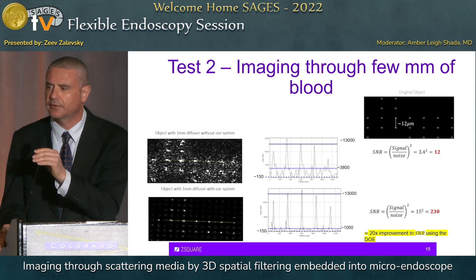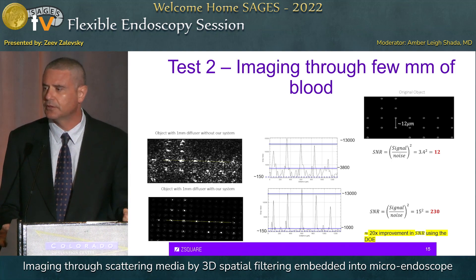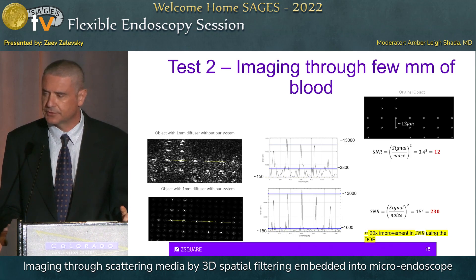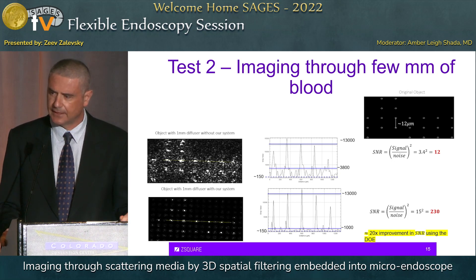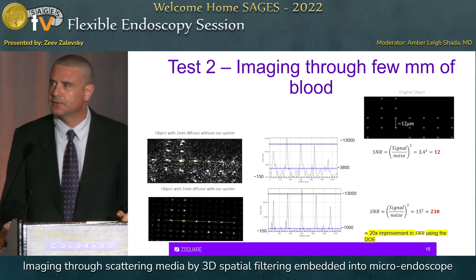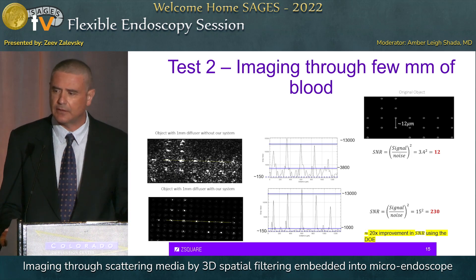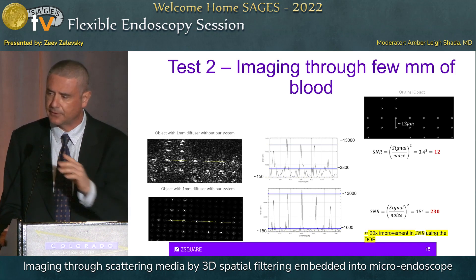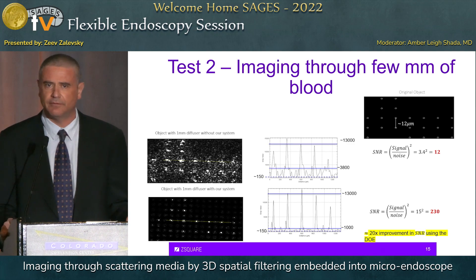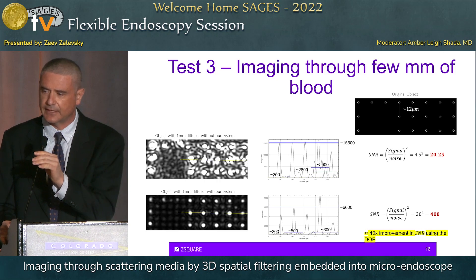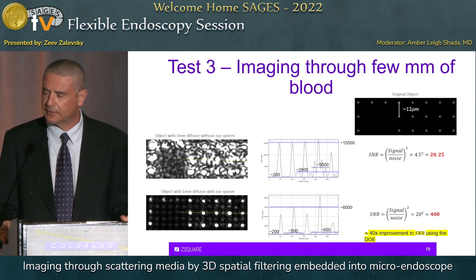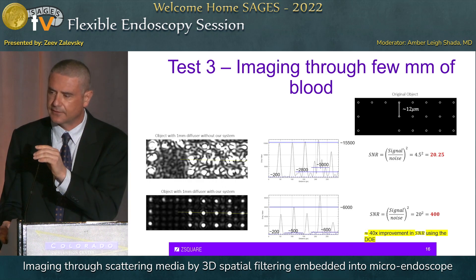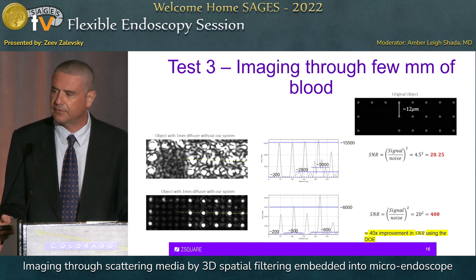In the next experiment, we performed imaging through a smaller field of view but through several millimeters of blood. You can see the resolution target on the upper right of the slide; on the upper left, how the object is imaged without our approach; and on the lower side, how it is seen through several millimeters of blood with our approach — yielding an SNR improvement by a factor of approximately 20. In another example, the upper left image is without our concept and the lower left is with our concept, giving an SNR improvement by a factor of 40.